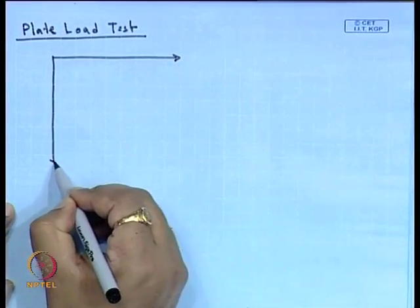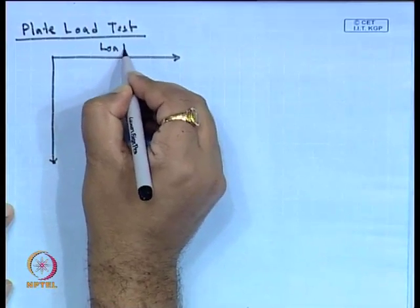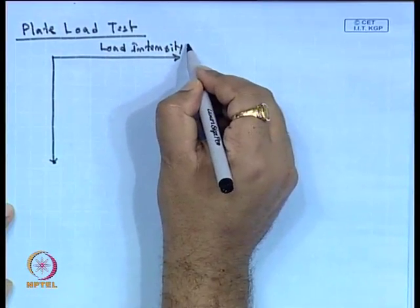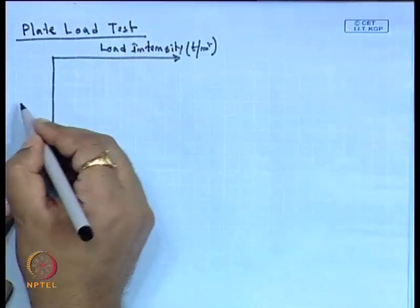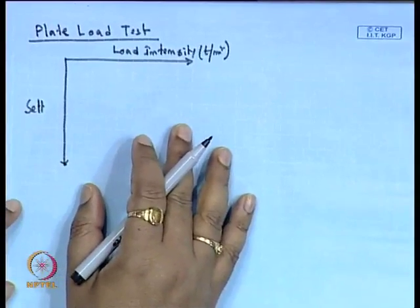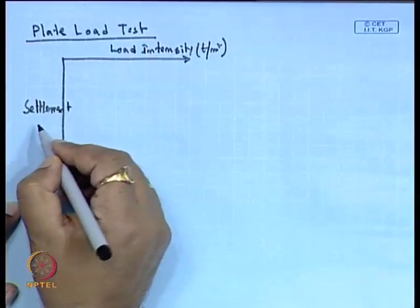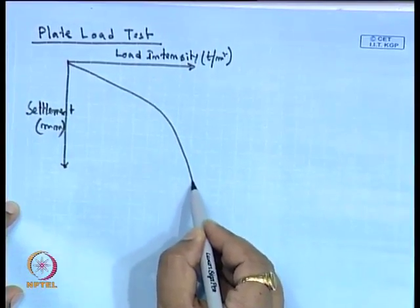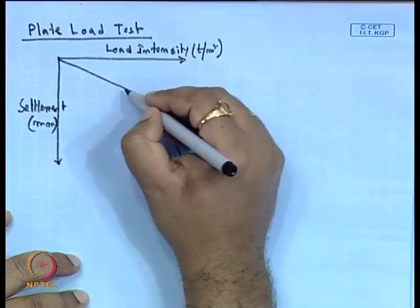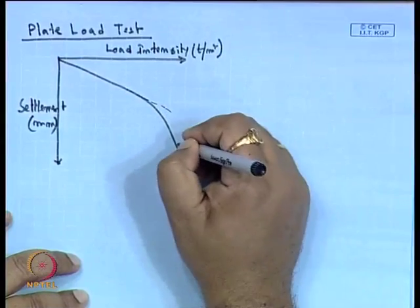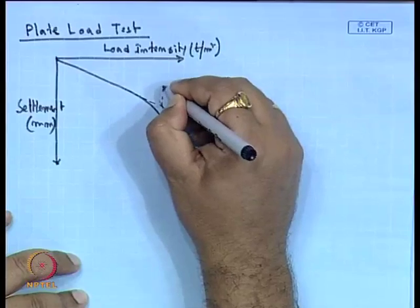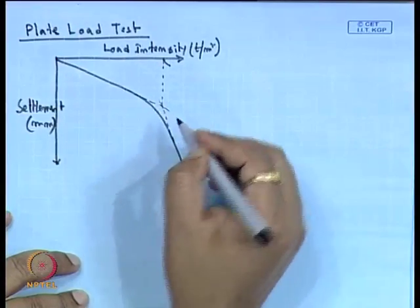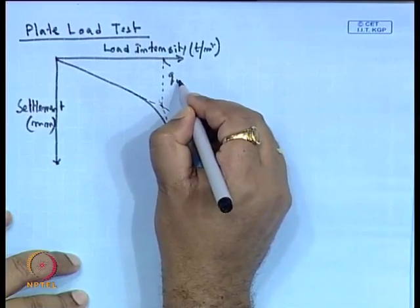This is the load versus settlement graph, with load in ton per meter square on one axis and settlement in millimeter on the other. Suppose we get this type of graph. So we can determine the ultimate load carrying capacity of this plate by using the double tangent method — extend the initial steep portion and extend the final flat portion. The intersection point's corresponding load intensity is the ultimate load carrying capacity of the plate.